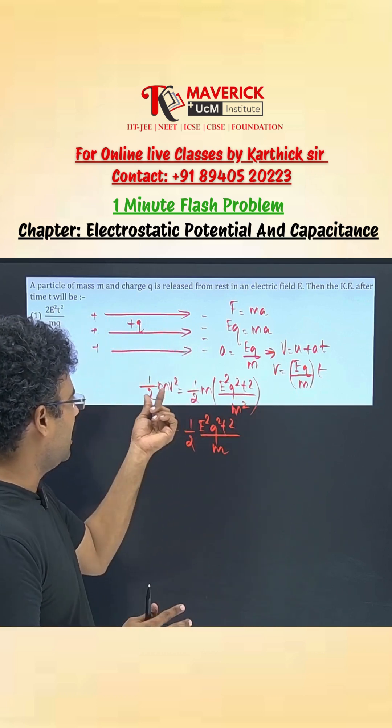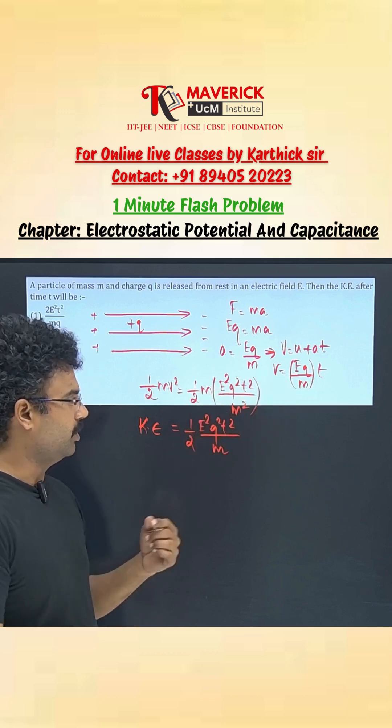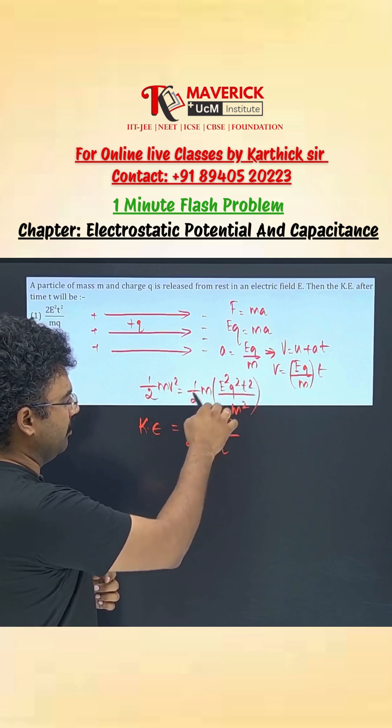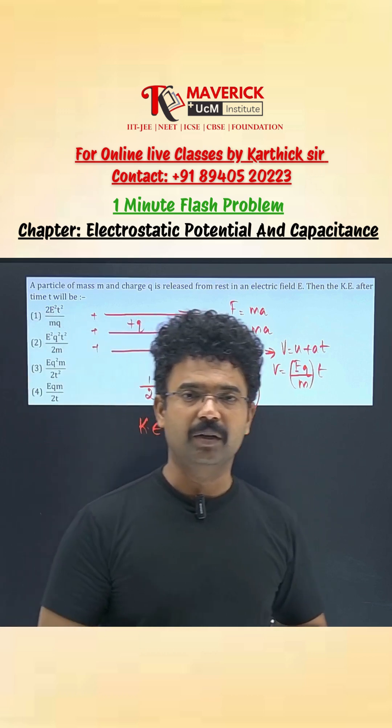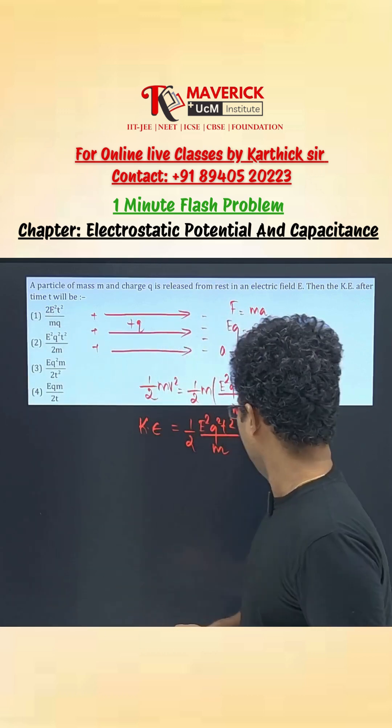So the kinetic energy is half m v square. Substituting gives e square q square t square by m square. m m gets cancelled, so the final answer is 1 by 2 e square q square t square by m.